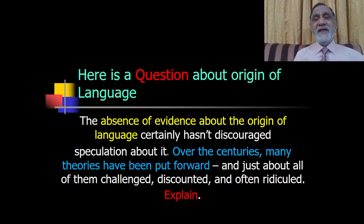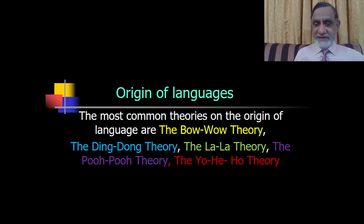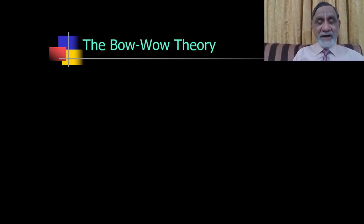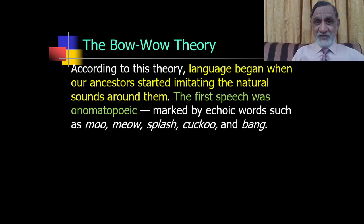Theories explain a phenomenon, usually from a scholar. The most common theories on the origin of language found in history and literature are the bow-wow theory, the ding-dong theory, the la-la theory, the poo-poo theory, and the yo-hee-ho theory. We will talk about each one of them. Remember, each theory gives its own reasons, and each theory has been questioned or criticized.